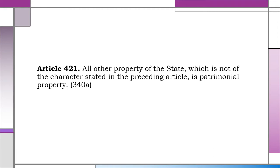Article 421. All other property of the state which is not of the character stated in the preceding article is patrimonial property. What is patrimonial property? Patrimonial property of the state is the property it owns but which is not devoted to public use, public service, or the development of the national wealth. It is wealth owned by the state in its private as distinguished from its public capacity. Based on decided cases, the following are examples of patrimonial property: 1. Friar lands; 2. The San Lázaro estate; 3. Properties obtained by the government in its escheat proceedings; 4. Municipal-owned waterworks system.